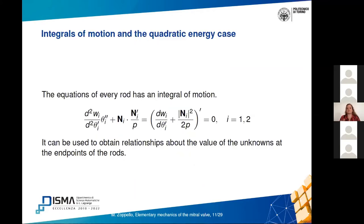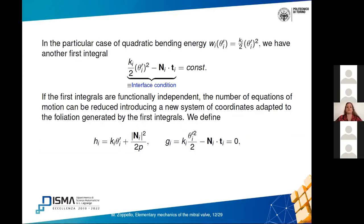The system can be reduced further because each rod's equation has a first integral — the quantity in parentheses — which provides relationships between the values of the unknowns at the endpoints. Moreover, if we use the classical quadratic bending energy k_i/2 times (θ_i')², we obtain another first integral which actually coincides with the interface condition, meaning it is always satisfied.